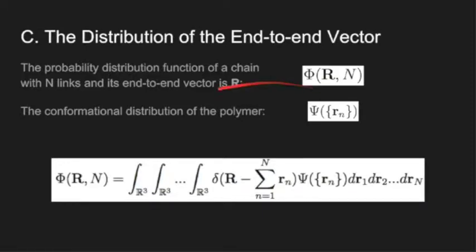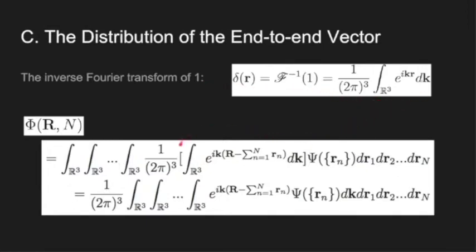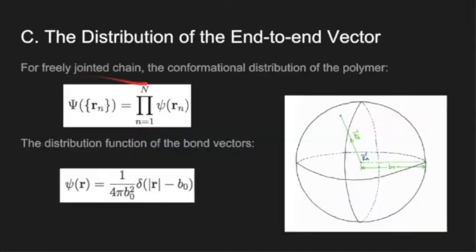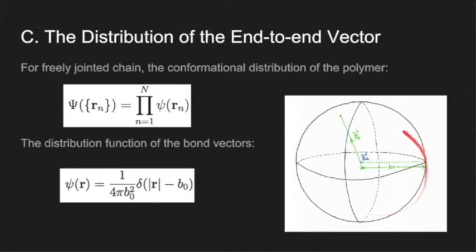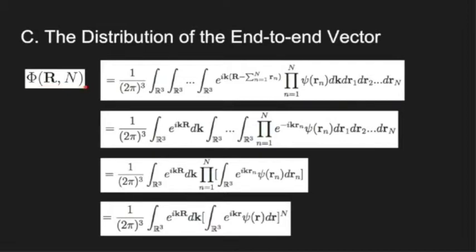First, let's see the expression of φ(r,N). Here, Ψ(r_N) represents the conformational distribution of the polymer and it depends on the position of each bond vector r_n. So we integrate over r_n to let the function Ψ lose the information of the r_n's so that we cannot tell the local structure of the polymer. However, we need to add a delta function here to make sure that the end-to-end vector is r. After knowing the expression of φ(r,N), we begin to transform this identity. By using the inverse Fourier transform, we can rewrite the equation. For the freely jointed chain, the conformational distribution Ψ(r_N) equals the product of φ(r_n), where φ(r_n) denotes the distribution function of the bond vectors. Since the bond vector can fully rotate on the surface of a sphere whose radius is b₀, the distribution is the point on the surface of the sphere divided by the total surface area. Then our distribution function of the end-to-end vector for the freely jointed chain becomes this expression.